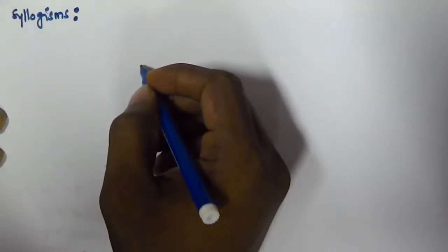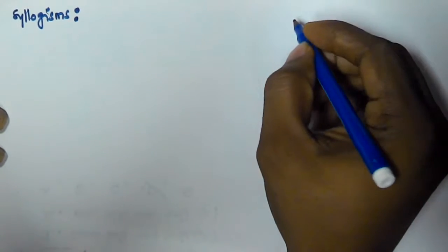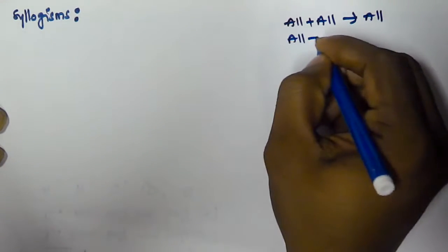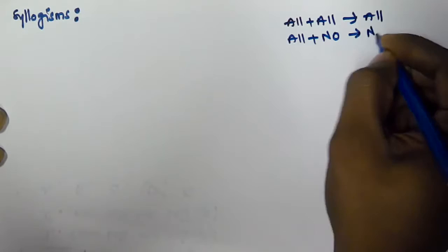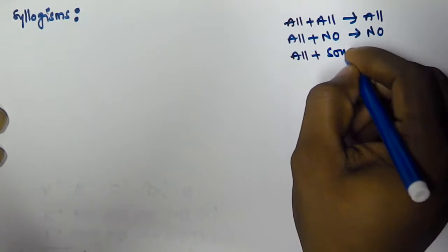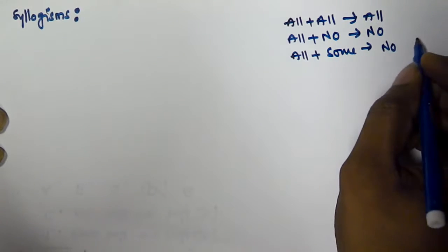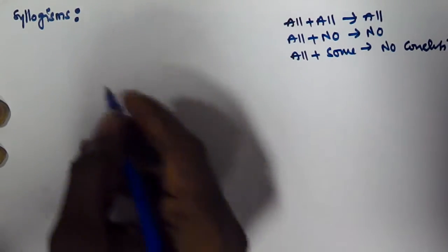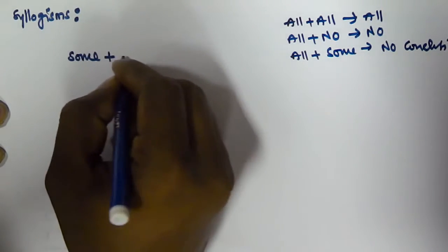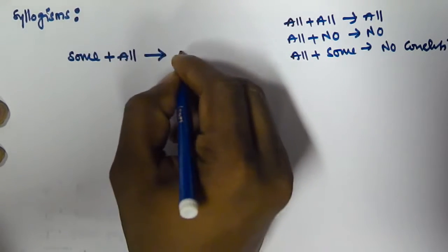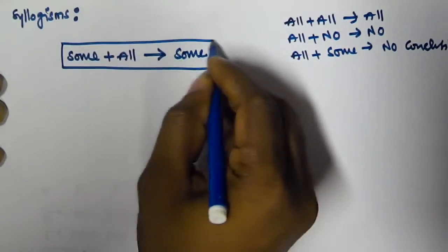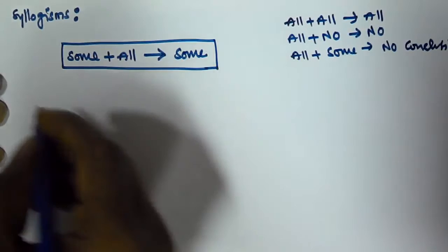Hello friends, in this video we will see another rule to solve syllogism problems. Till now we have seen three rules: all plus all gives all, all plus no gives no, and all plus some gives no conclusion. In this video you will see another rule: some plus all will give some.